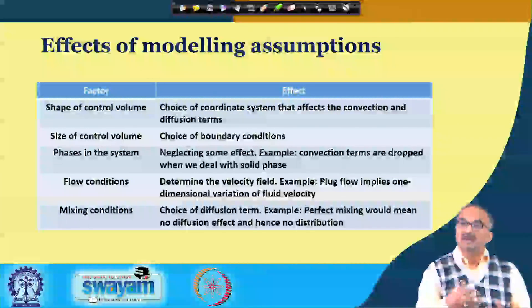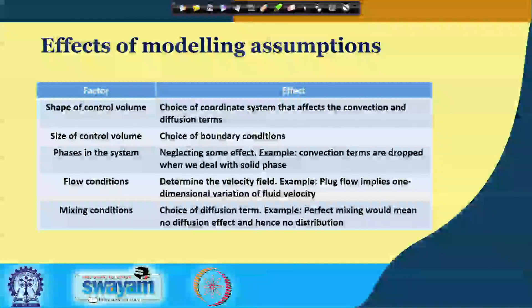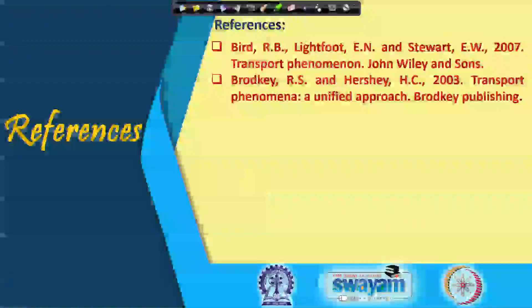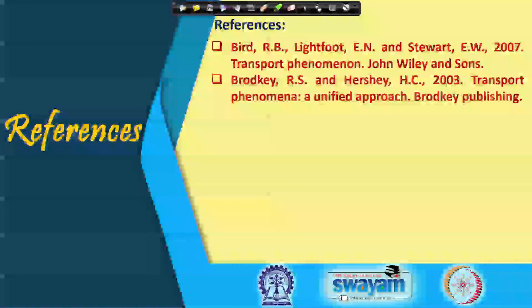With these modeling assumptions, I hope you have gotten a fairly good idea of how you can simplify a 3D equation to maybe 2D or 1D, which will help you in simplifying your solution for the system. In our next lecture, we shall be taking some examples and showing how we apply all these assumptions for many commonly observed phenomena. These are the references which you can refer to for more details on all the aspects touched upon. Thank you.